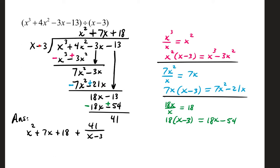18x divided by 1x is 18. 18 goes up in the quotient. 18 times the divisor is 18x minus 54. Change your signs. 18x minus 18x is 0. Negative 13 plus 54 is 41. If you have a remainder that's not 0, then when you write your full answer, it's quotient plus or minus — depending on the sign of your remainder — the remainder over your divisor. So if you have a remainder that's not 0, you have a fraction at the end: remainder over divisor.